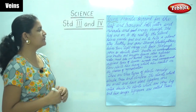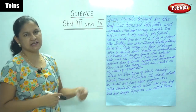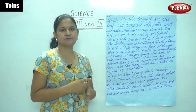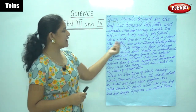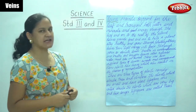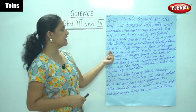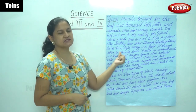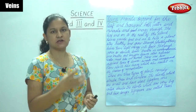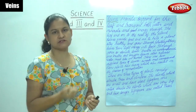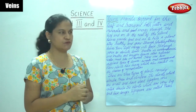Leaves provide food and air to help a plant stay healthy and grow. Through photosynthesis, leaves turn light energy into food. The sunlight absorbed by the chlorophyll is then converted into food.